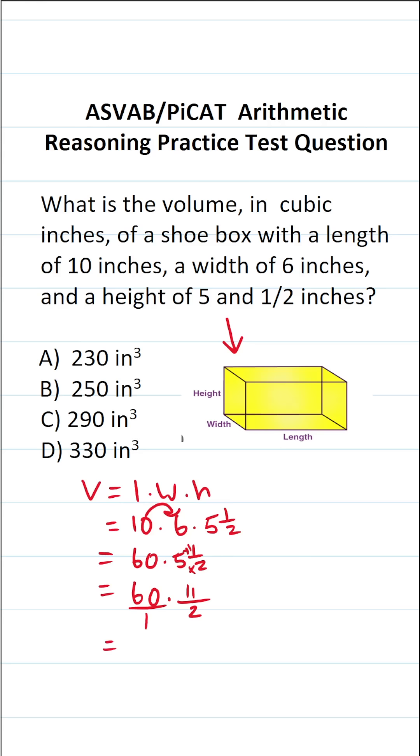In doing so, this enables me to cross-reduce. More specifically, I can say 2 goes into 2 one time. 2 goes into 60 thirty times. This becomes 30 over 1, which is 30, times 11 over 1, which is 11.